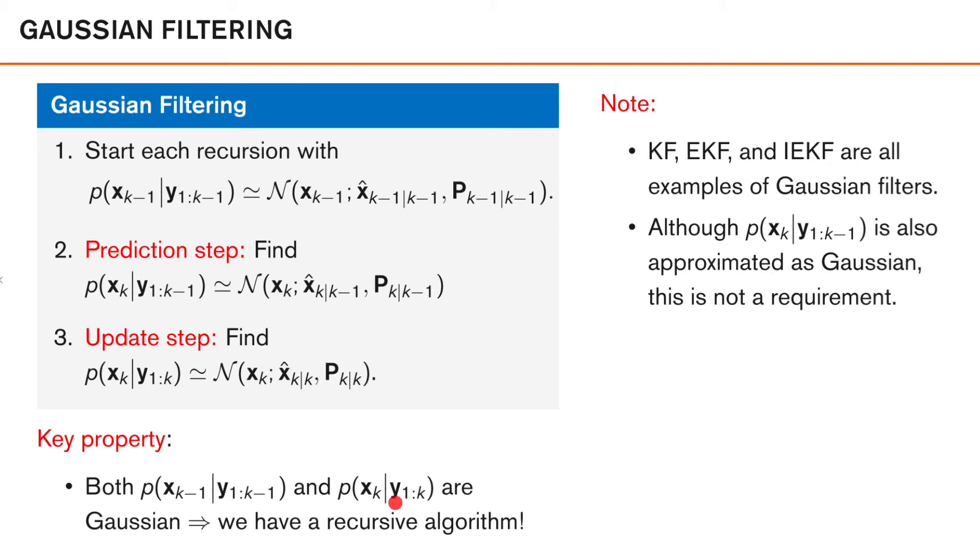At the next recursion, this will be our Gaussian prior and we can do exactly the same thing again, but now we instead update with the measurement YK plus 1, and so on. This means that our filters are simple to implement and that they will have a predictable complexity for each filter recursion. All our previous filters, the Kalman filter, the extended Kalman filter, and the iterative EKF, are all examples of Gaussian filters. We should perhaps also note that the second step here, the prediction step, does not have to be Gaussian in order for this to be a Gaussian filter, but it's very common that this is the case. The important thing is that both the prior and the posterior are Gaussian.